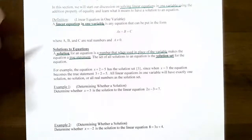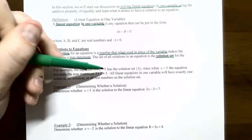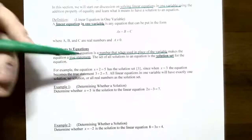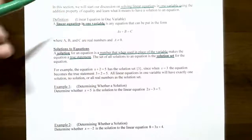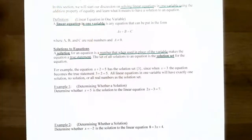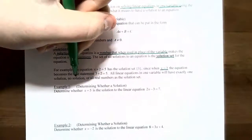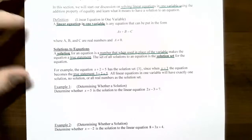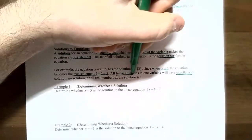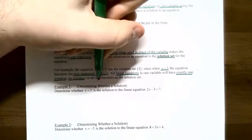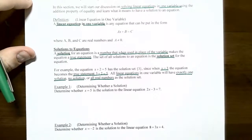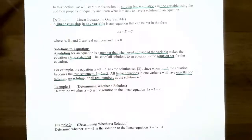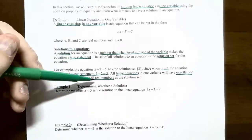The solution set uses curly brackets. For example, the equation X plus 2 equals 5 is asking what number do you need to add 2 to get 5. The solution has to be 3, because 3 plus 2 is 5. So the solution set is {3}. X equals 3 makes the equation a true statement: you get 3 plus 2 equals 5. For linear equations in one variable, you will have exactly one solution, no solution, or all real numbers — those are the only possibilities.